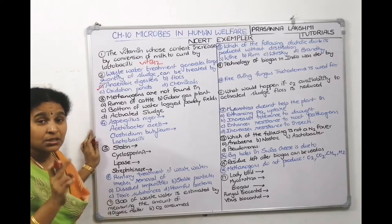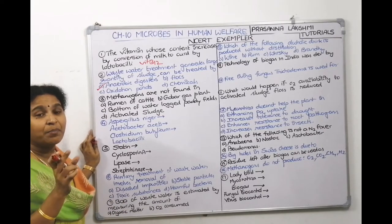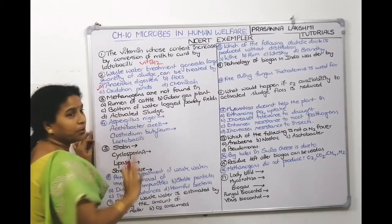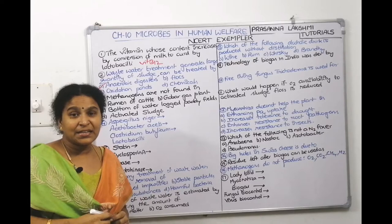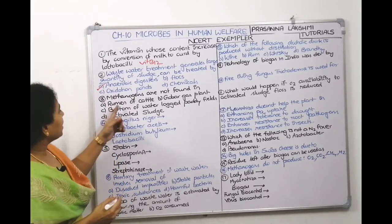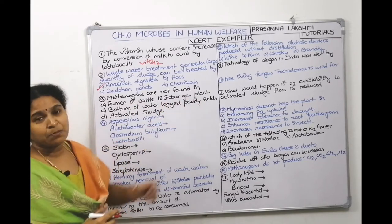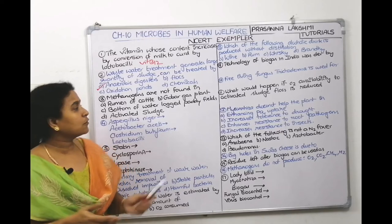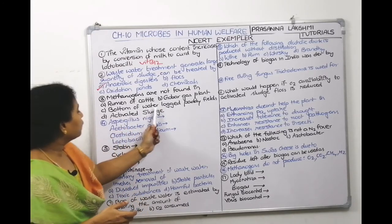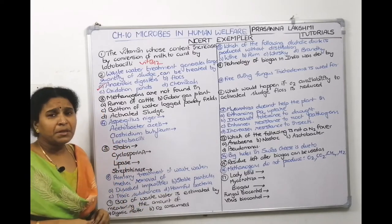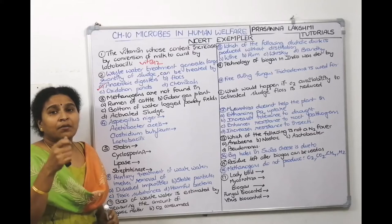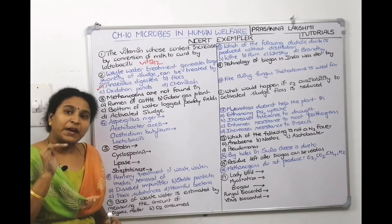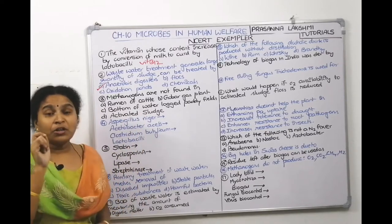Third question: methanogens are not found in — where? Methanogens are organisms which make biogas (gobar gas). They are present in the rumen of cattle, where cellulase helps in digestion of cellulose. They are also present in gobar gas plants and at the bottom of waterlogged paddy fields, where anaerobic conditions exist. Wherever anaerobic conditions exist, we find methanogens.